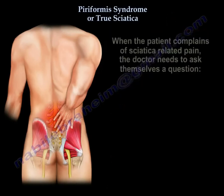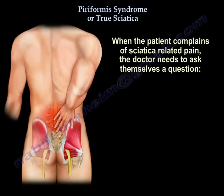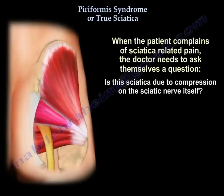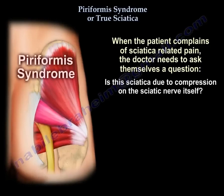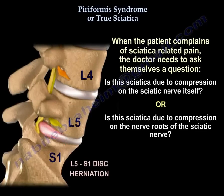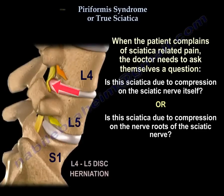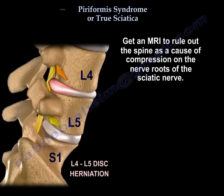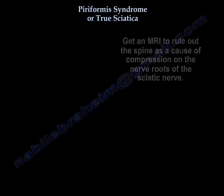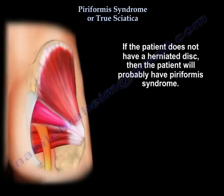So when the patient complains of sciatica, the doctor needs to ask: is this sciatica due to compression on the sciatic nerve itself, or is it due to compression on the nerve roots of the sciatic nerve? An MRI should be obtained to rule out the spine as a cause of compression on the nerve roots. If the patient does not have a herniated disc, then the patient will probably have piriformis syndrome.